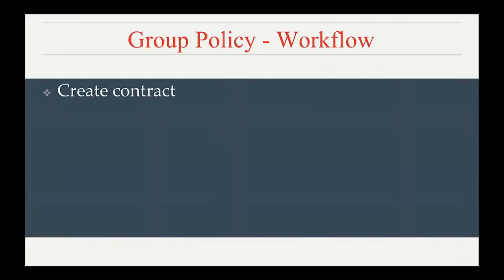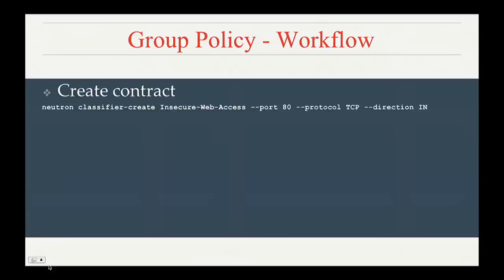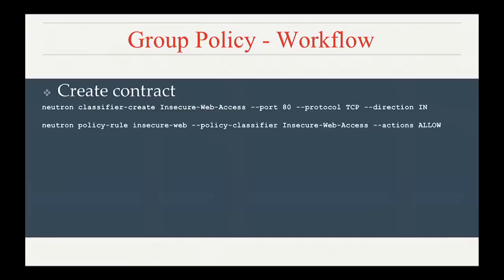Let's walk through the workflow one step at a time, best explained through the CLI. First you create a classifier — in this example, to provide access to a web server — named 'insecure web access', opening port 80 using TCP. Next, you wrap that classifier into a policy rule and say that the action is 'allow' for this traffic. Third, you create a contract from this — a simplified example with just one policy rule, though you could have multiple.